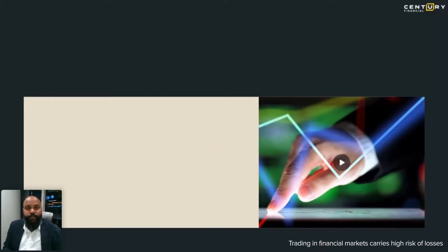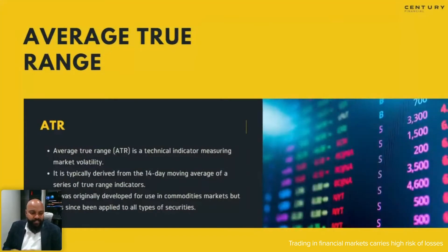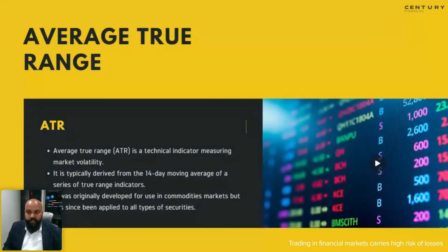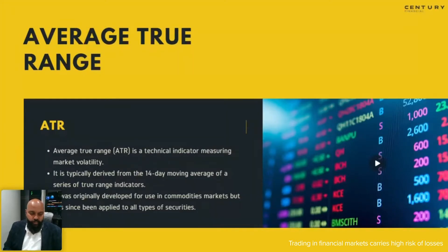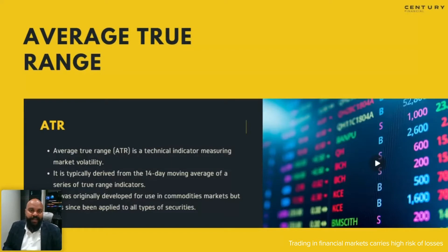Moving forward, the first thing we're going to look at today is the Average True Range. I will make it very simple to understand and show you practically how to apply it on your charts. Basically, the Average True Range is a technical indicator measuring market volatility. It is typically derived from 14-day movement. So when we talk about a 14-day moving average, we are looking at the last 14 days. For example, if we take Apple, we look at the last 14 days of movement from when Apple opened to when it closes, and we get an average true range from those 14 days.